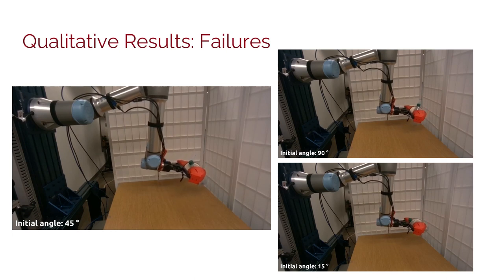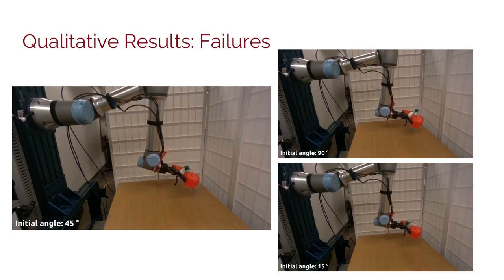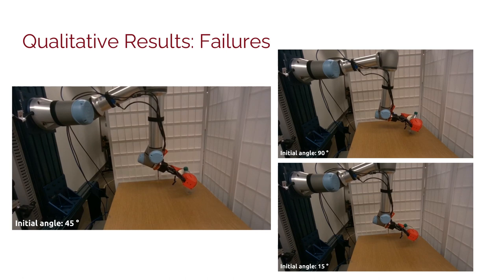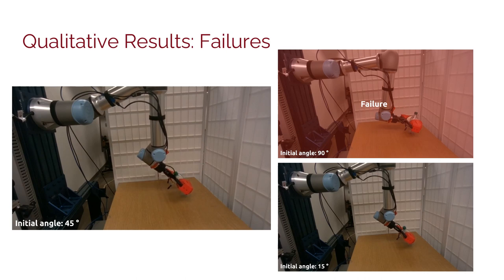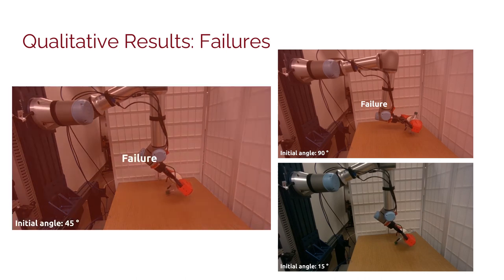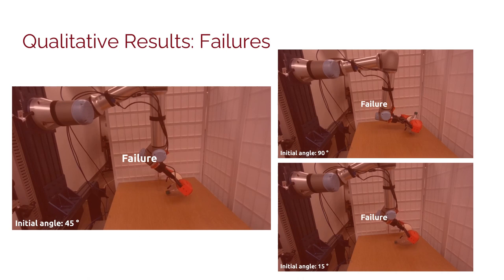Here we show qualitative results of failed rollouts of the trained Diffusion Policy on the rotate bottle task with the same initial bottle rotations. We note that these failure cases occurred due to lack of generalization of certain models, inherent difficulty of placing an empty bottle that can become unbalanced, and initializations that are nearly out of distribution.